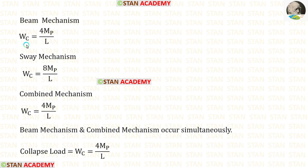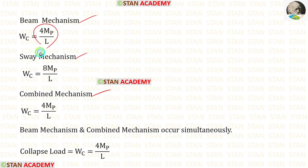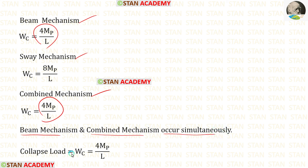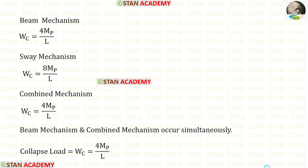We have found the collapse load Wc three times: in the beam mechanism, the sway mechanism, and the combined mechanism. We must select the minimum value. The minimum is 4 MB upon L, so the beam mechanism and combined mechanism occur simultaneously. Therefore the collapse load Wc is 4 MB upon L.